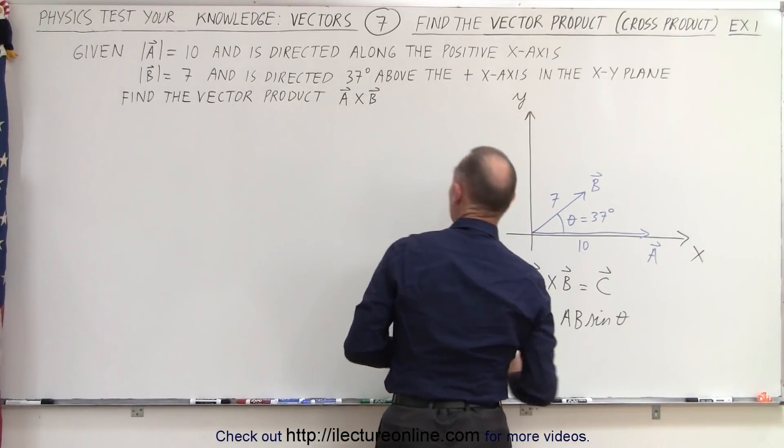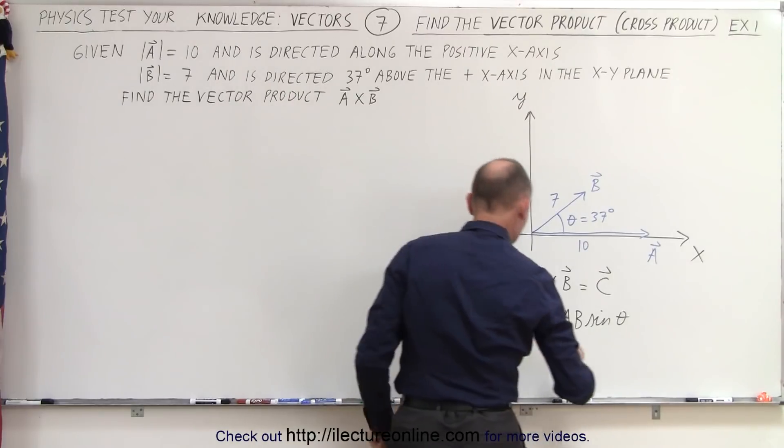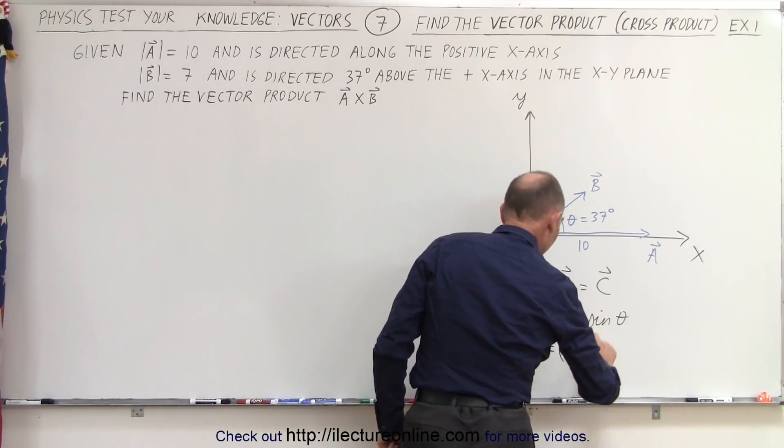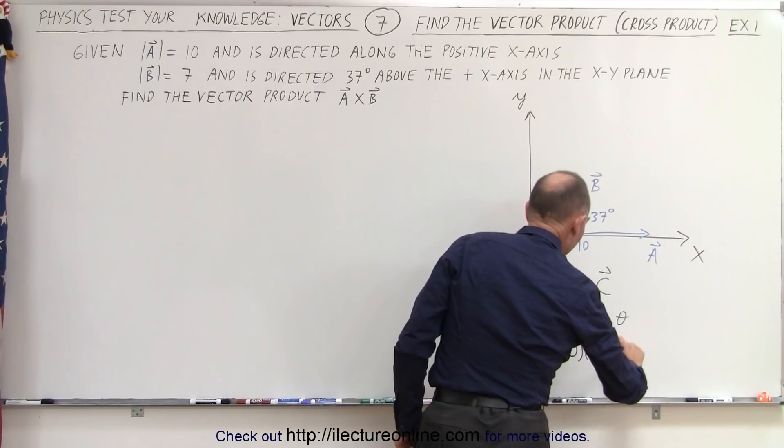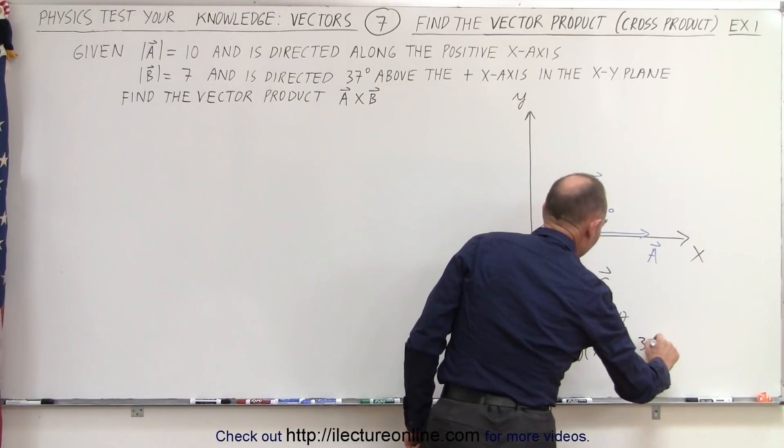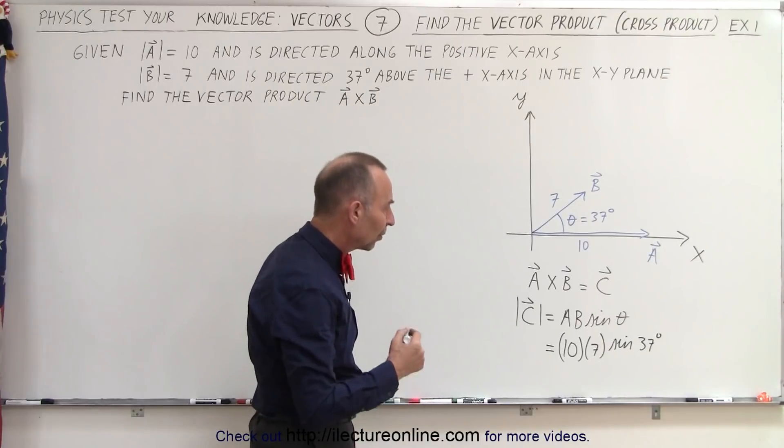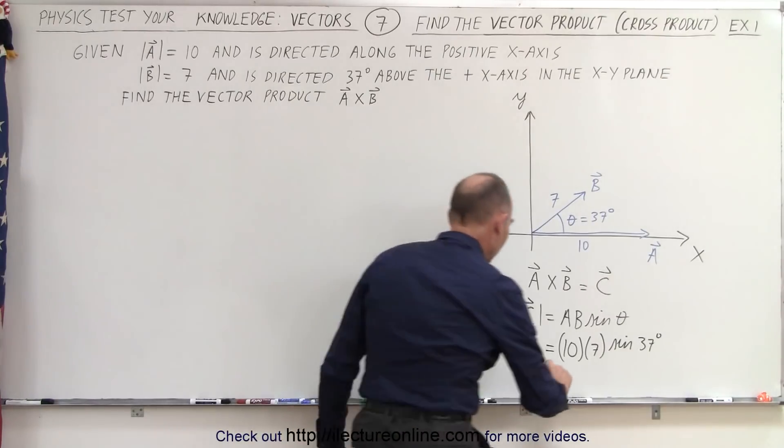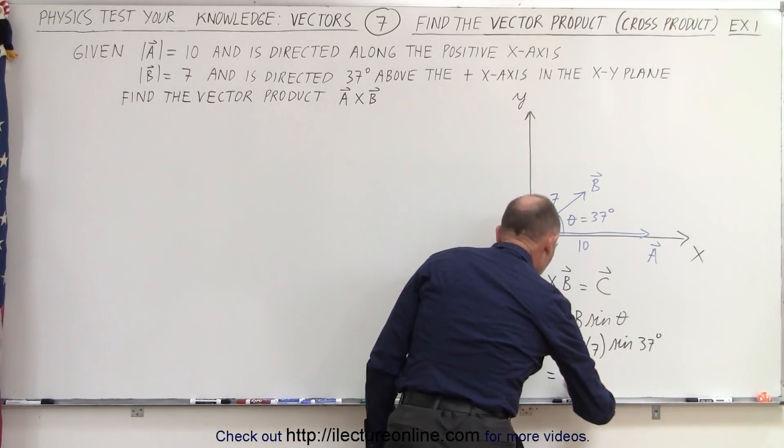In this case, A would be equal to 10, B would be equal to 7, and then we'll multiply times the sine of 37 degrees, which is 0.6. So 70 times 0.6 would be equal to about 42.